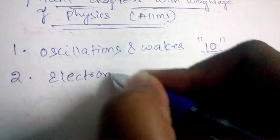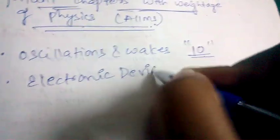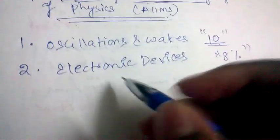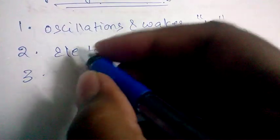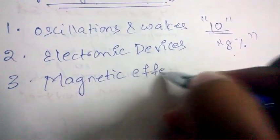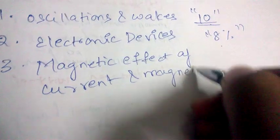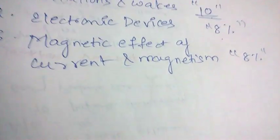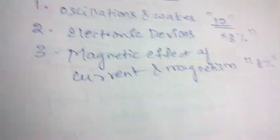The second important chapter is Electronic Devices — 8% of questions from physics will be appearing from this chapter. The next important chapter is Magnetic Effect of Current and Magnetism, from which also 8% of questions from the whole physics question paper will be appearing.